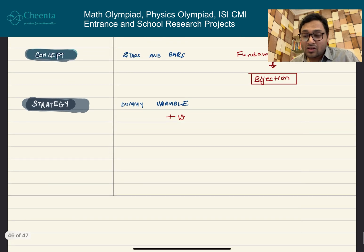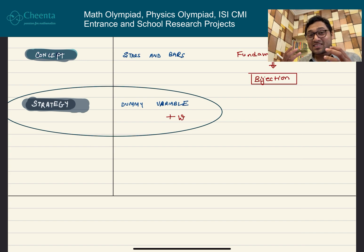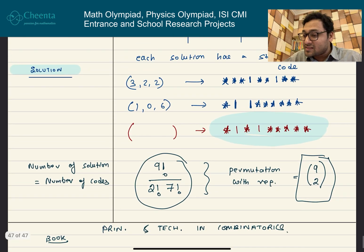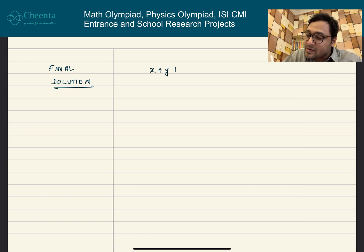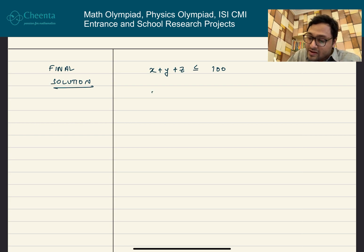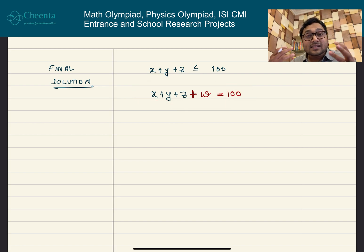Now that we understand the concept, we will use the dummy variable strategy to solve the original problem. Mathematical Olympiad problems are not just about concepts and formulas — strategies make them interesting. We are interested in x + y + z ≤ 100. We introduce a dummy variable w and convert this to the equation x + y + z + w = 100, where w is non-negative. We can now apply the stars and bars method to this equation.